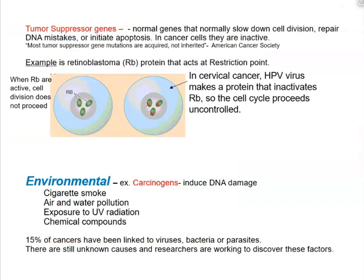There are also tumor suppressor genes. Normally they slow down cell division, are involved in DNA repair mechanisms, and initiate apoptosis. In cancer cells, tumor suppressor genes are typically inactive. The American Cancer Society states that most tumor suppressor gene mutations are acquired, not inherited. One example is retinoblastoma protein, which acts at the restriction point at the very end of G1 phase.